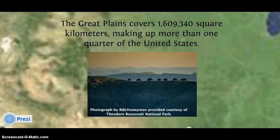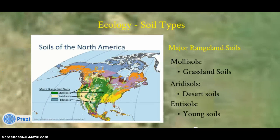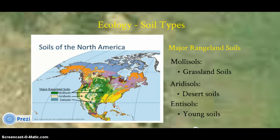Did you know? The Great Plains ecosystem covers 1.6 million square kilometers, making up more than a quarter of the United States land surface. This map depicts the soils of North America. The major soil type in the grassland rangeland ecosystems is mollisols — that green area corresponds largely with the plains ecoregions. Our desert soils, or aridisols, are located over the desert ecosystems spanning southern United States and Mexico. Entisols are younger soils, mostly found on alluvial fronts.